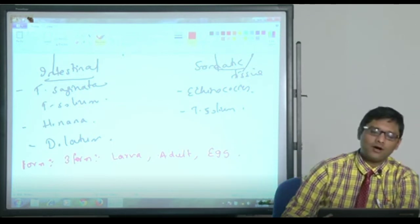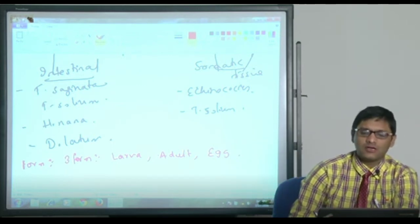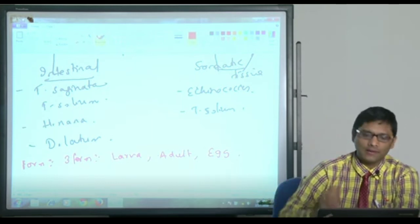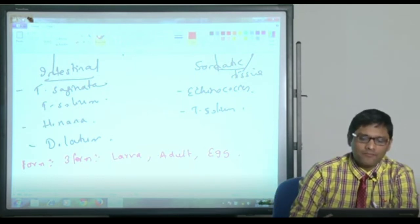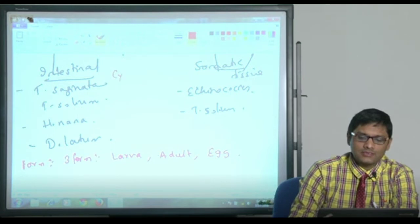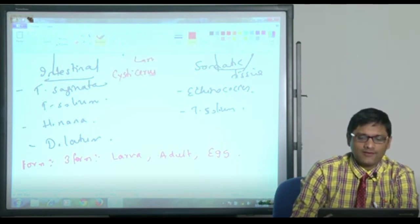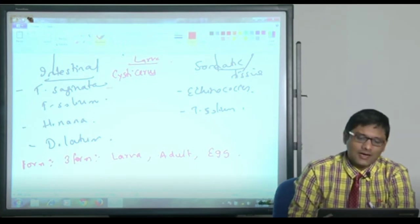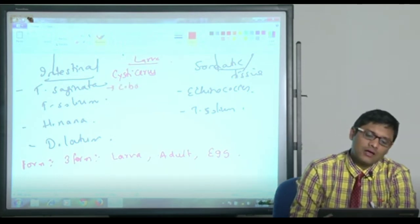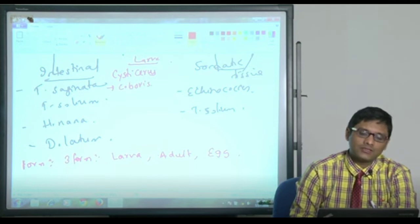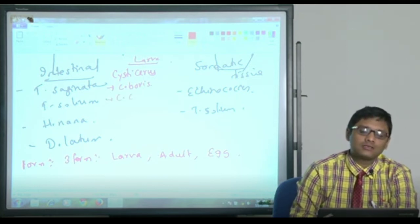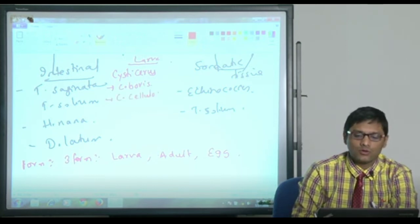The larva of different Cestode have different names. For example, Tinea, the larva is called as Cysticercus. Tinea Saginata is Bovis, whereas Tinea Solium is Cysticercus cellulosae.